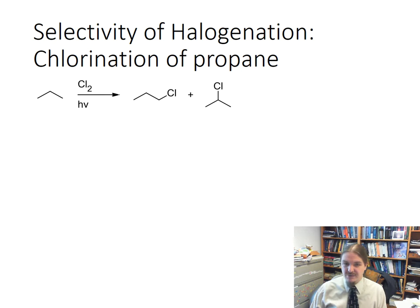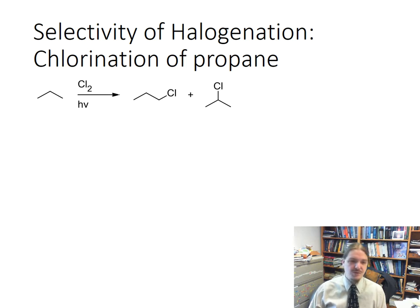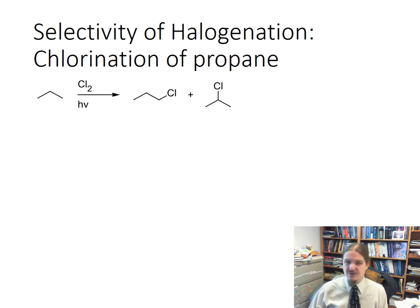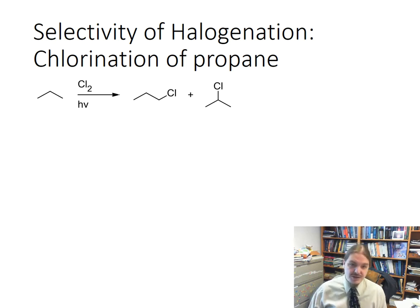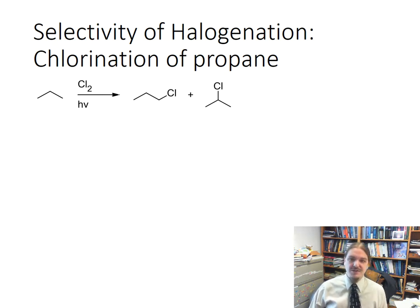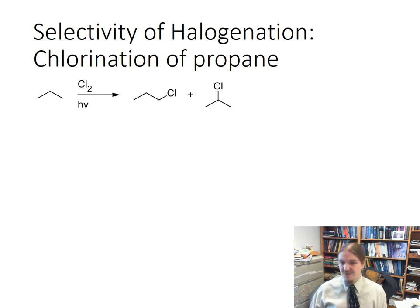We're going to start off with a really simple case of propane. In the radical chlorination of propane, there are two possible products: 1-chloropropane and 2-chloropropane. Because propane is symmetric, putting a chlorine on one end of the chain is the same as putting a chlorine on the other end. There are six different hydrogens that can be removed in either of the methyl groups, and two hydrogens that can be removed in the middle. If you're just basing your product distribution on the number of hydrogens, you might expect that 1-chloropropane ends up being the major product. And you would be wrong.